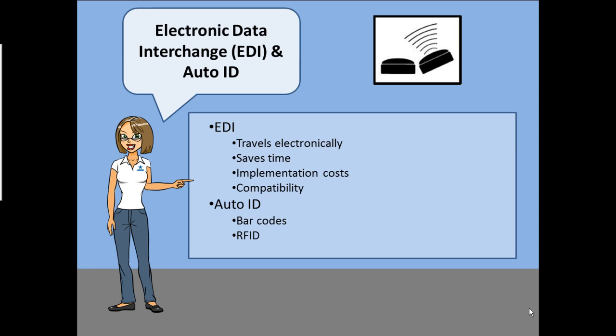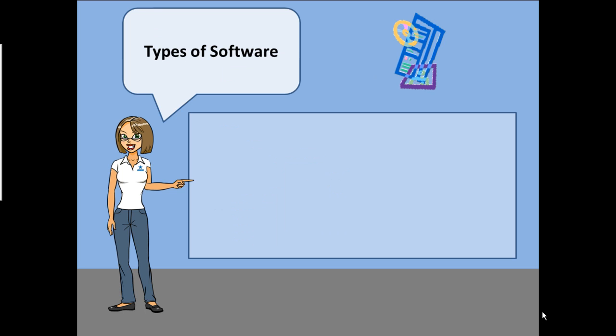Now that we have briefly reviewed EDI and AutoID, let's look at the different types of software applications available to those in the transportation and logistics field. There are three types of software systems we will discuss: Transportation management system, warehouse management system, and event management system.